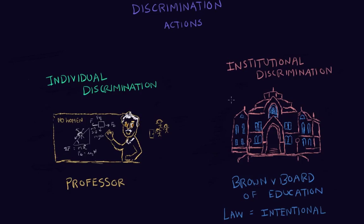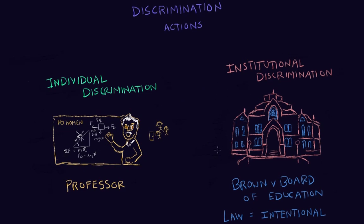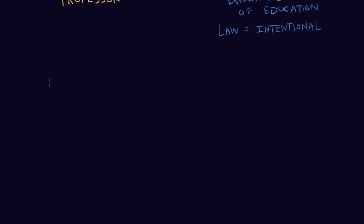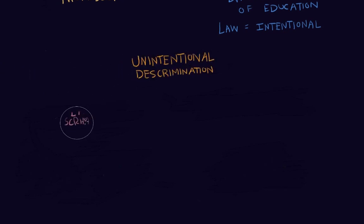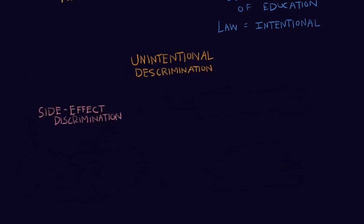Institutional discrimination can be done through a couple of different ways — intentional and unintentional. That law is an example of intentional discrimination. Now let's look at how institutional and organizational policies can discriminate unintentionally. The first type is called side effect discrimination, which talks about how one institution or organization can influence another negatively.